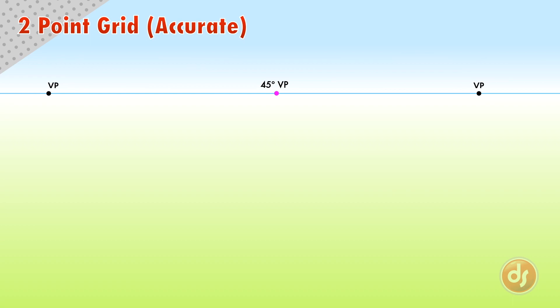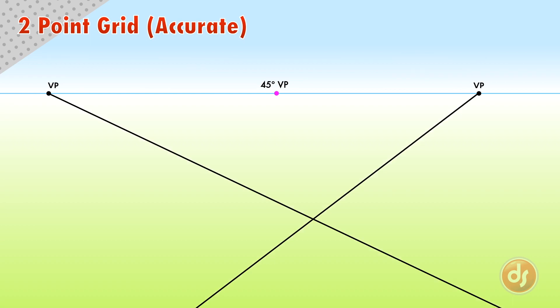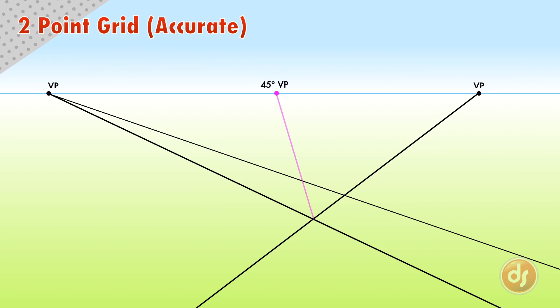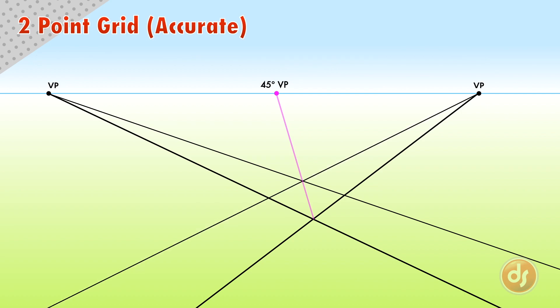Now that we have two vanishing points and a 45-degree vanishing point based on the viewer's station point, we can construct a more accurate grid. To make our first tile, bring lines down from the vanishing points to create the bottom corner of the tile, then draw one more side and pause. We need to draw a line up from the bottom corner of our box to the 45-degree vanishing point. Where it crosses our side perspective line tells us exactly where the back corner of a perfect square in space would be. Since we know this is the back of our tile, we cross it with the other perspective line — this will be the first tile of our grid.